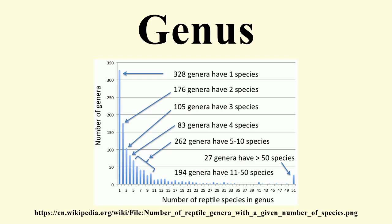Identical names within the same kingdom. One generic name can apply to only one genus. This is why the platypus belongs to the genus Ornithorhynchus. Although George Shaw named it Platypus in 1799, that name had already been given to a group of ambrosia beetles by Johann Friedrich Wilhelm Herbst in 1793. Since beetles and platypuses are both members of the kingdom Animalia, the name could not be used for both. Johann Friedrich Blumenbach published the replacement name Ornithorhynchus in 1800.